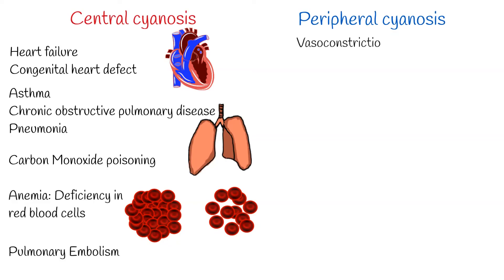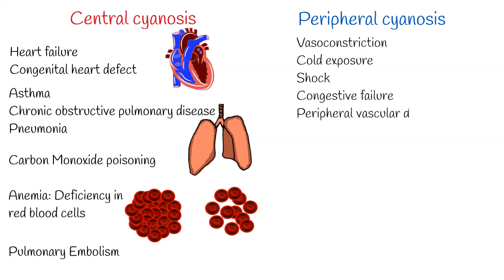Peripheral cyanosis results from vasoconstriction and diminished peripheral blood flow, such as occurs in cold exposure, shock, congestive failure, and peripheral vascular disease. Often in these conditions, the mucous membranes of the oral cavity, including the sublingual mucosa, may be spared.